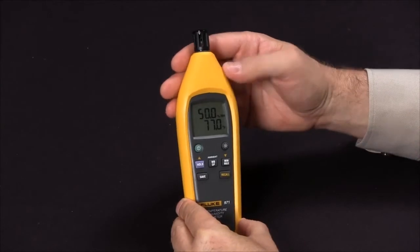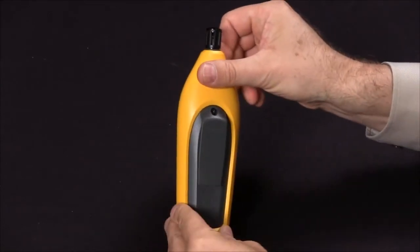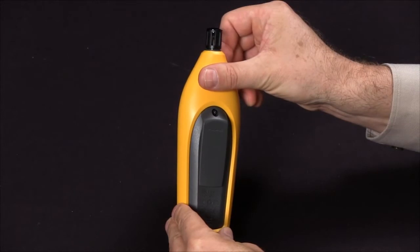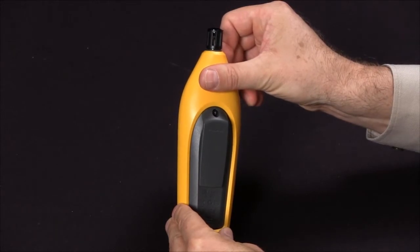Now, you can change to degrees Celsius. Simply remove the battery access panel, and you will find a selector switch to change to either degrees Celsius or degrees Fahrenheit.